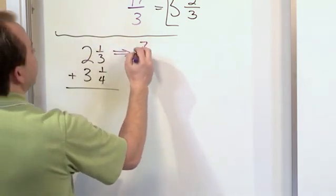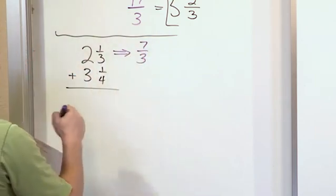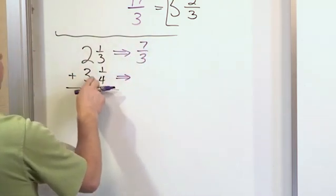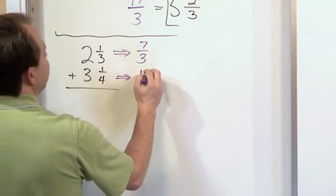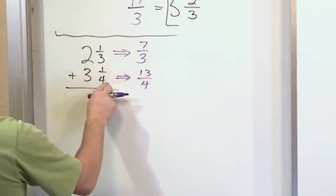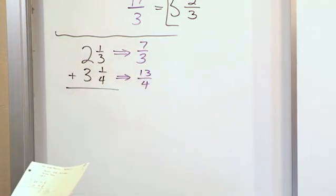Three times two is six, plus one is seven, write it as 7/3, seven-thirds. This one, four times three is twelve, plus one is thirteen, and you write it over four because the original denominator was a four there.